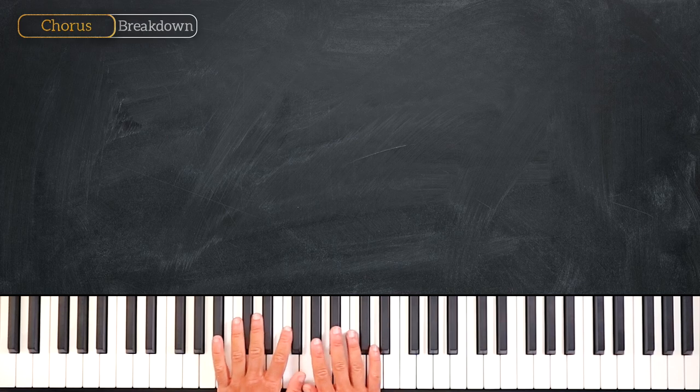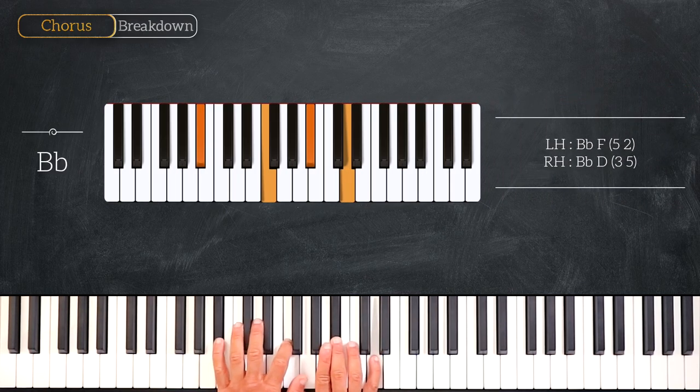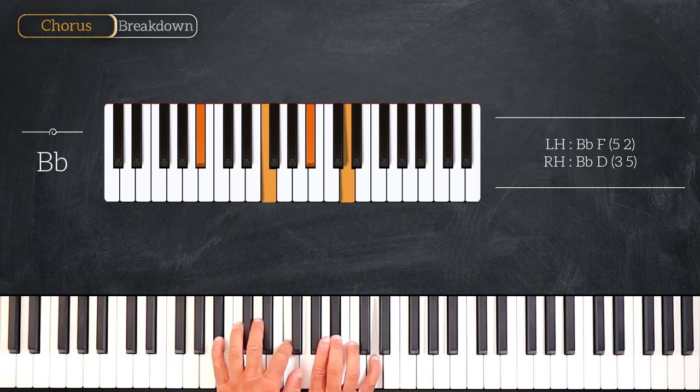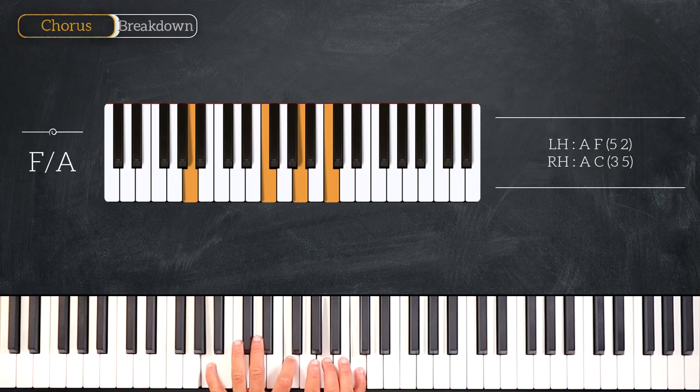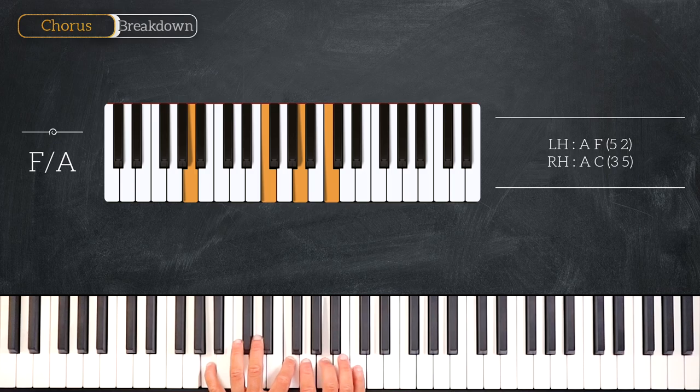So we start on Bb, playing Bb F on the left and Bb D on the right. Then we'll play this F over A chord, playing A F on the left and A C on the right.